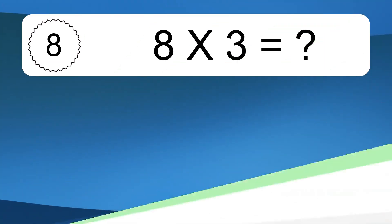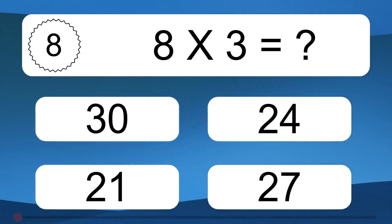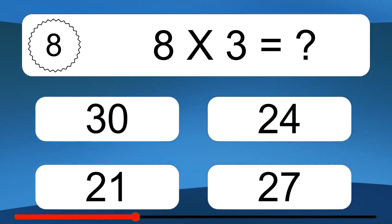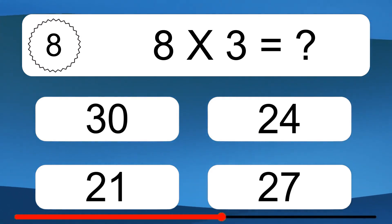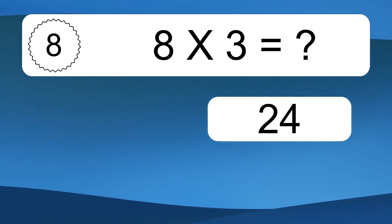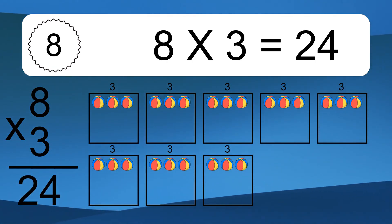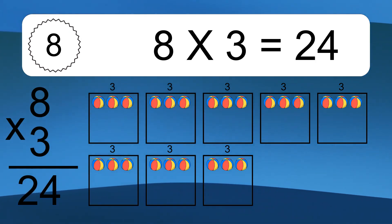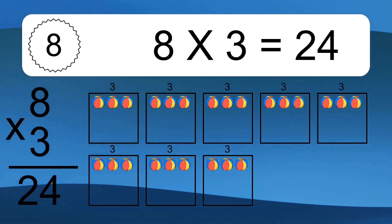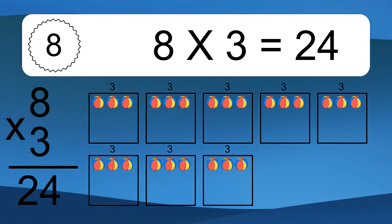8 times 3 equals what? 8 times 3 equals 24. We have 8 boxes, and each box has 3 colorful balls inside. If you count all the balls in all the boxes together, you will have 8 times 3 balls. This equals 24 balls.